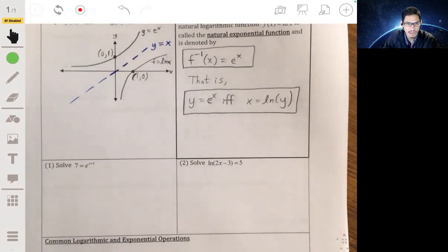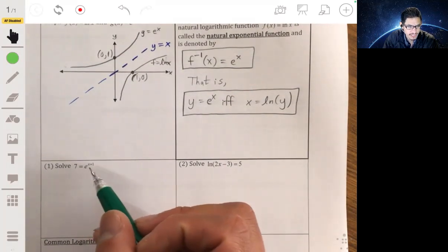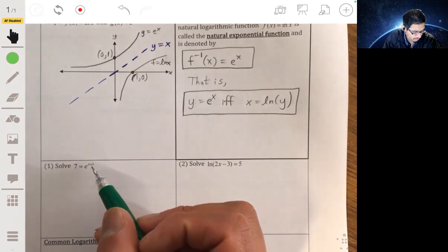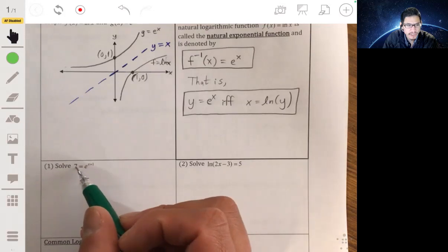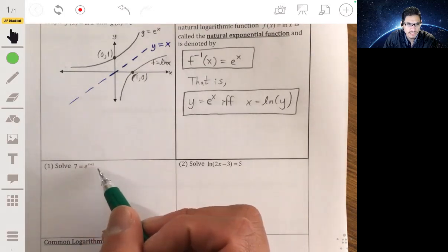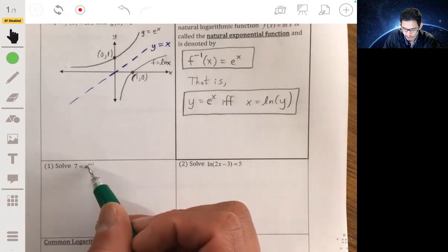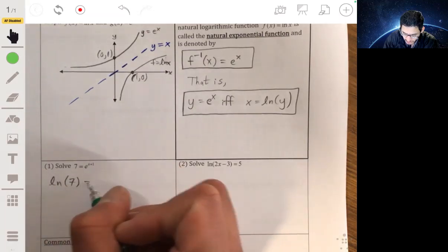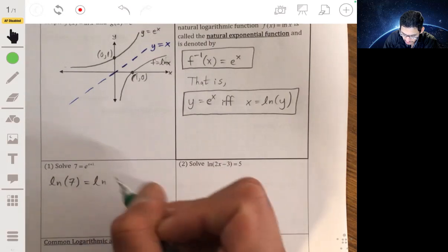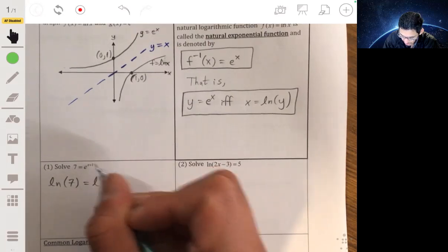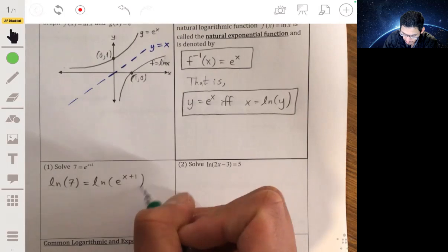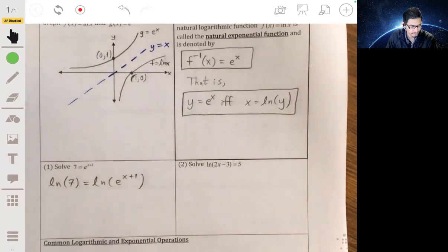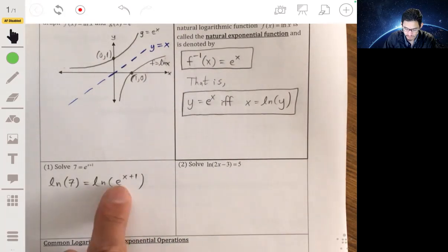So we got 7 equals e to the x plus 1. And we want to solve for x. Remember, we can take the logarithm of both sides. And since we have our base here, let's take the natural logarithm. So we'll take the natural log of 7 and the natural log of e to the x plus 1.